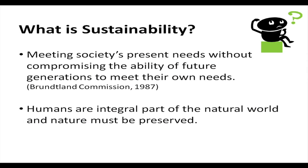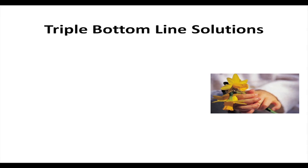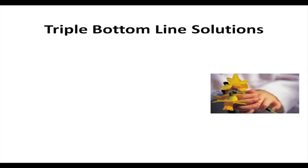We humans are an integral part of the natural world, and nature must be preserved so that our future generations can enjoy it as well. In terms of solutions, sustainability requires meeting present needs without compromising future generations. The approach that has been suggested is also called the triple bottom line solution.